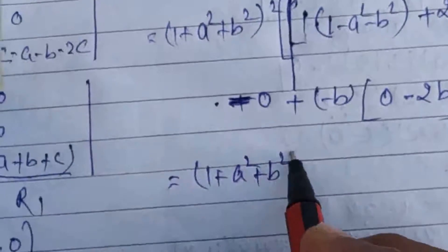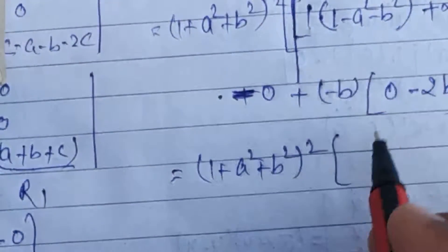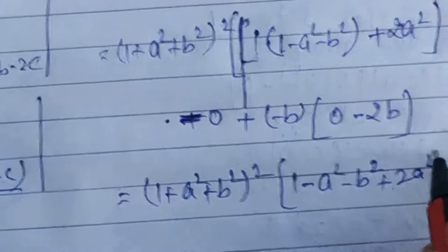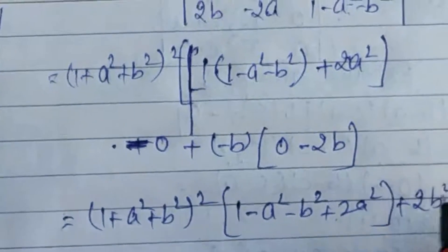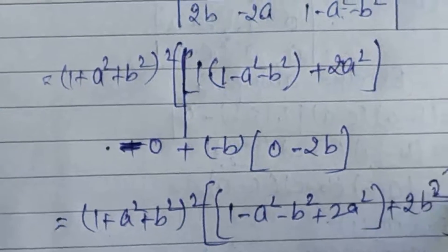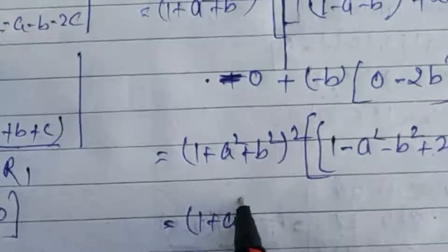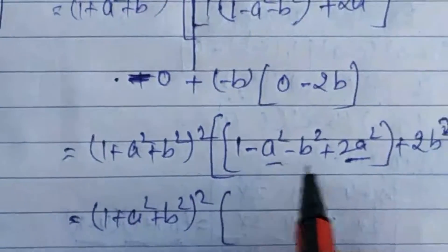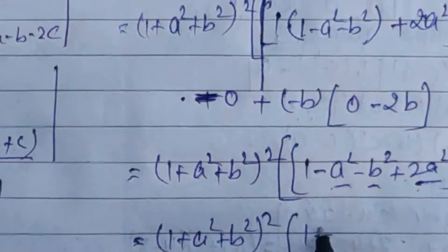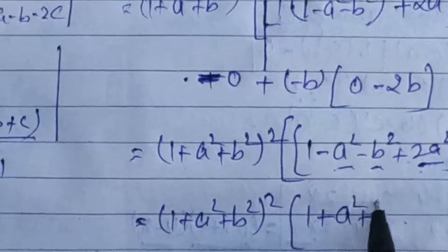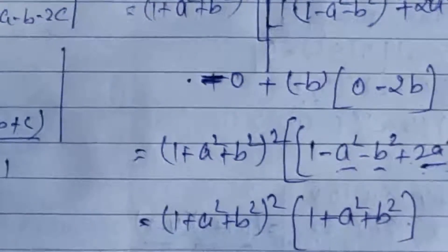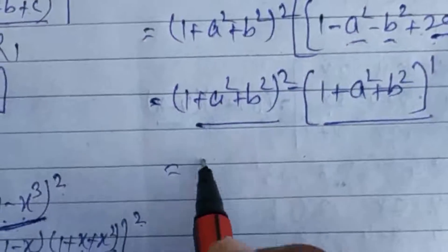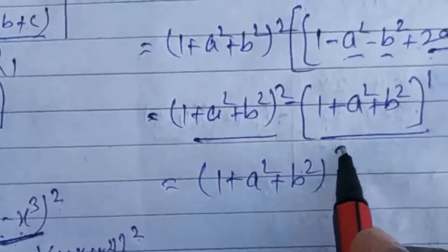So, (1 plus a square plus b square) whole square into [1 minus a square minus b square plus 2a square plus 2b square]. Simplifying: 2a square minus a square = plus a square, and minus b square plus 2b square = plus b square. So we get (1 plus a square plus b square) whole square into (1 plus a square plus b square) = (1 plus a square plus b square) whole cube. Thank you.